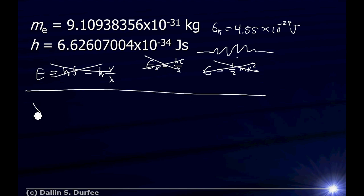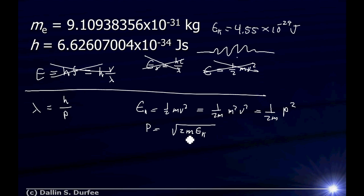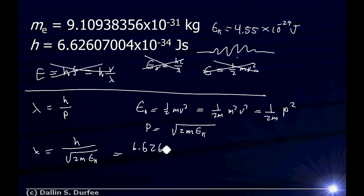Instead, let's use the de Broglie relation that gives us the wavelength directly: wavelength is h over p. Now p depends on the actual velocity of the electron, not the wave velocity. We can find p from the kinetic energy by remembering that kinetic energy is one-half mv squared. Multiplying by m over m, this becomes p squared over 2m. So the momentum is just the square root of 2m times kinetic energy. The wavelength is therefore Planck's constant over the square root of 2m times kinetic energy. Planck's constant is 6.62607 times 10 to the negative 34 joule-seconds.